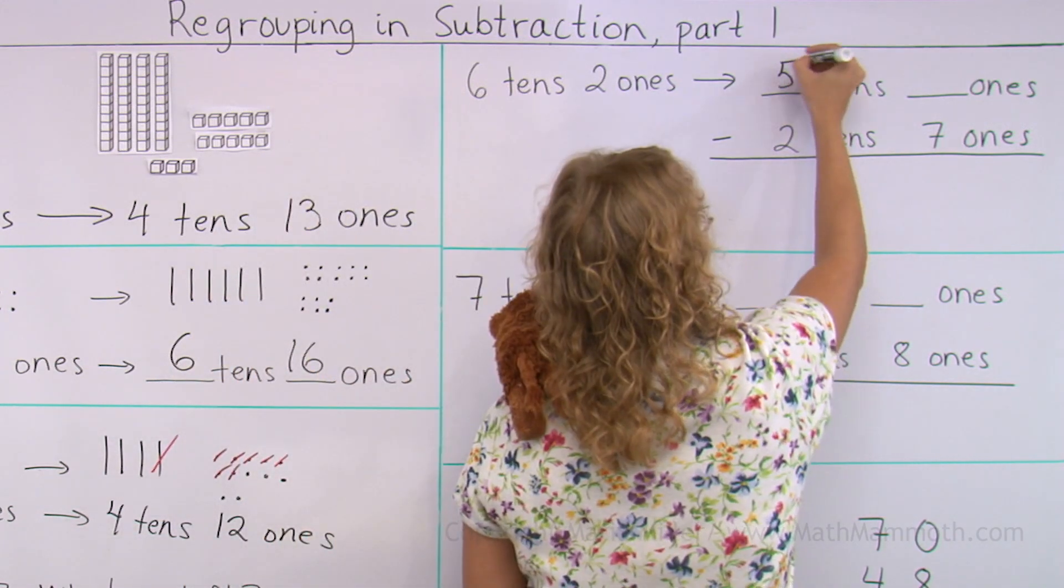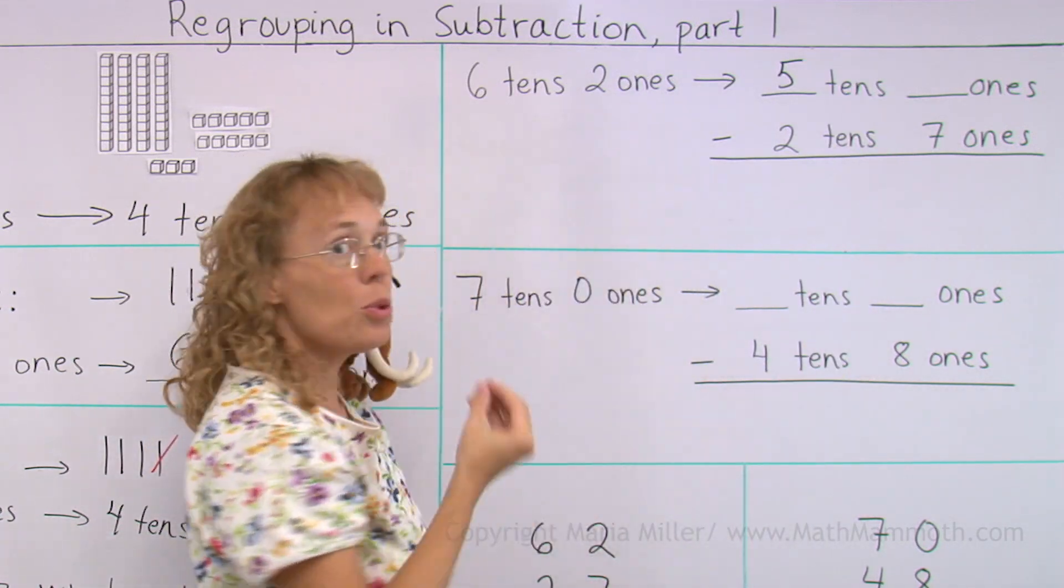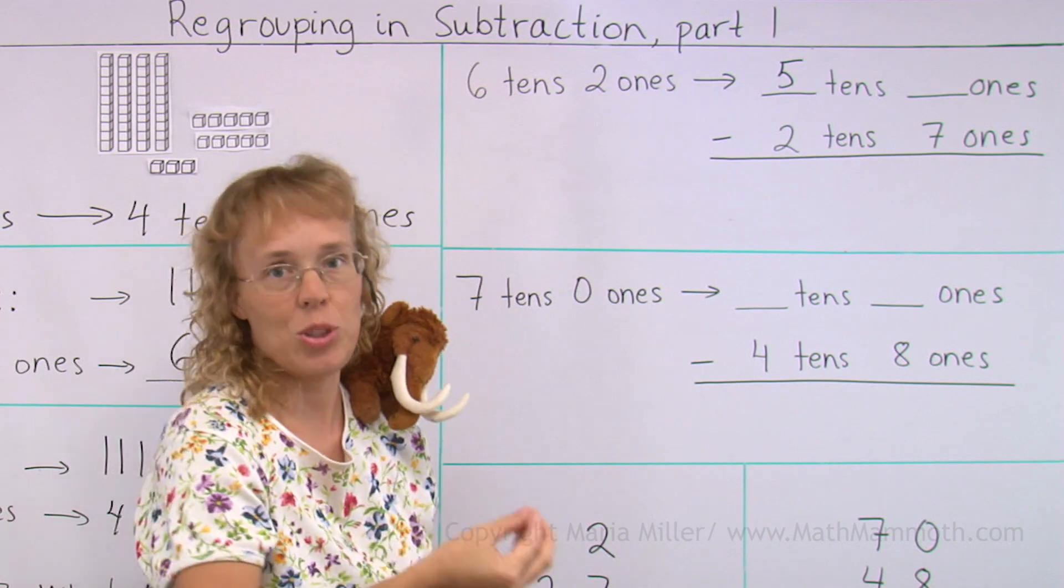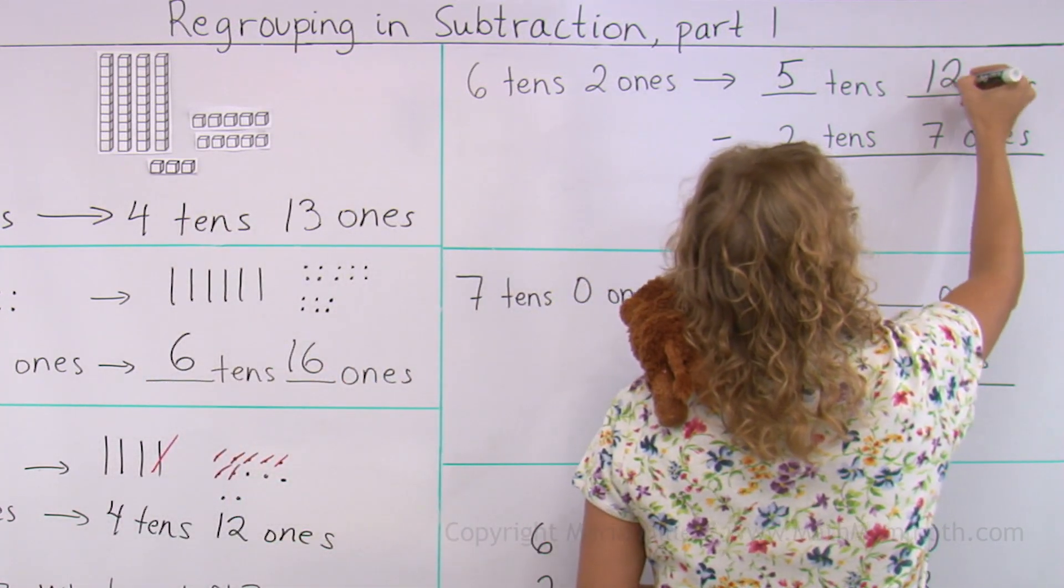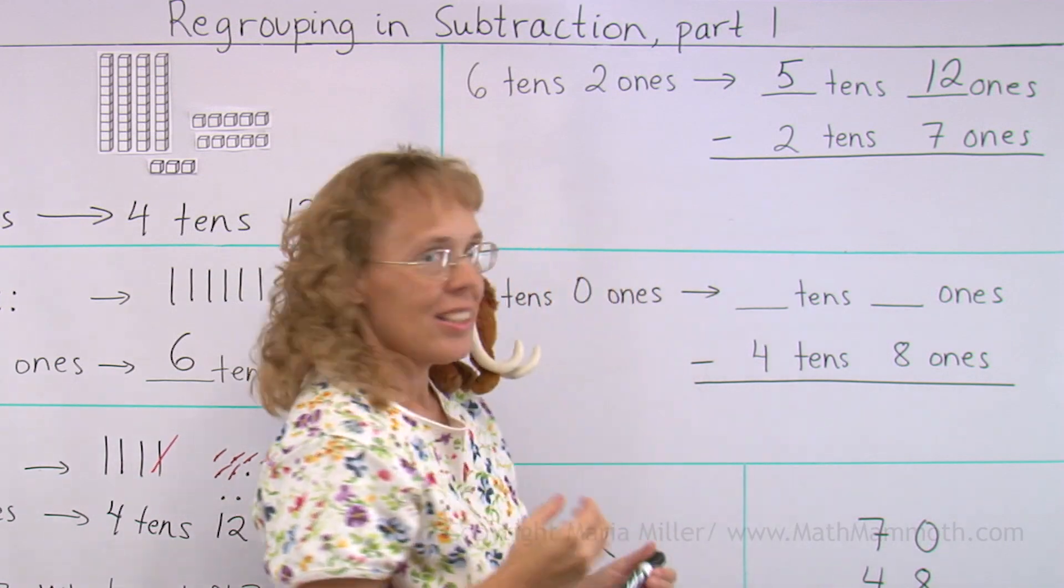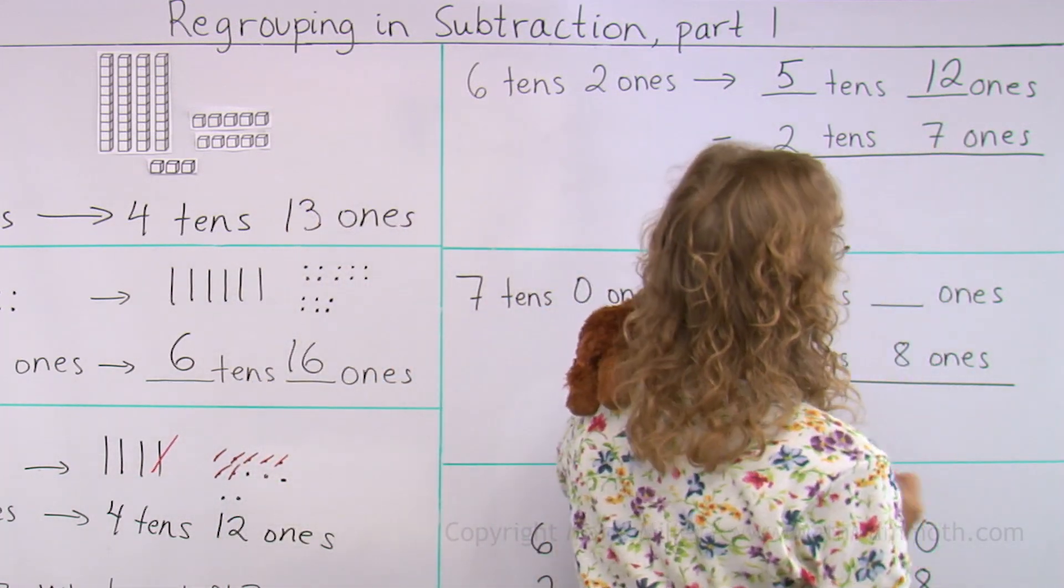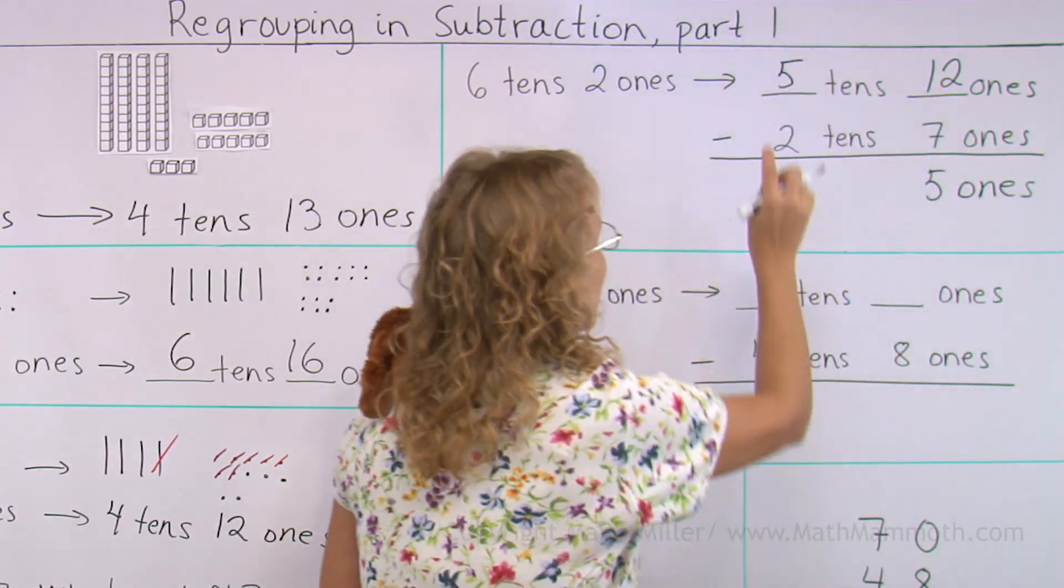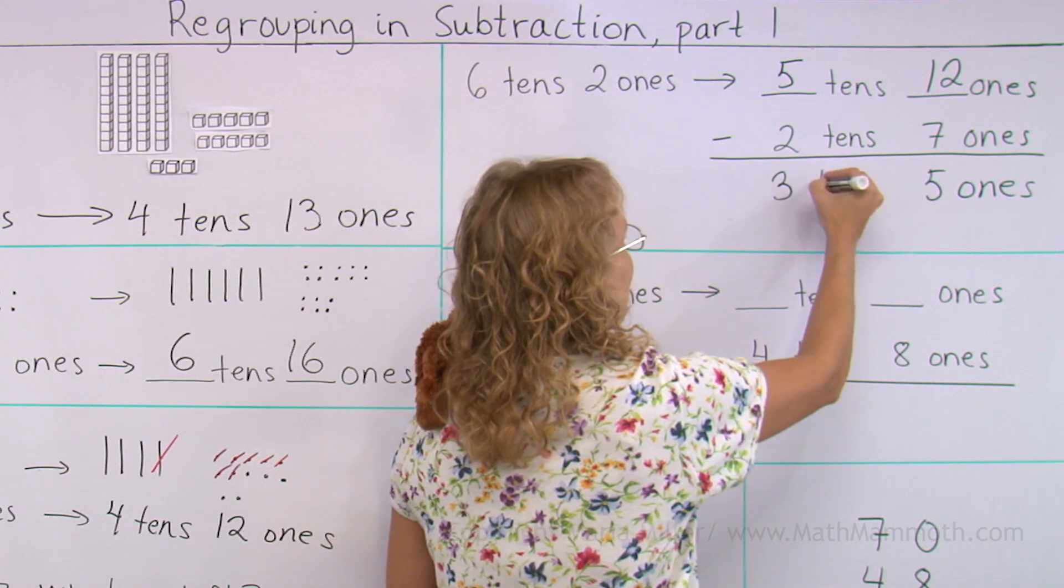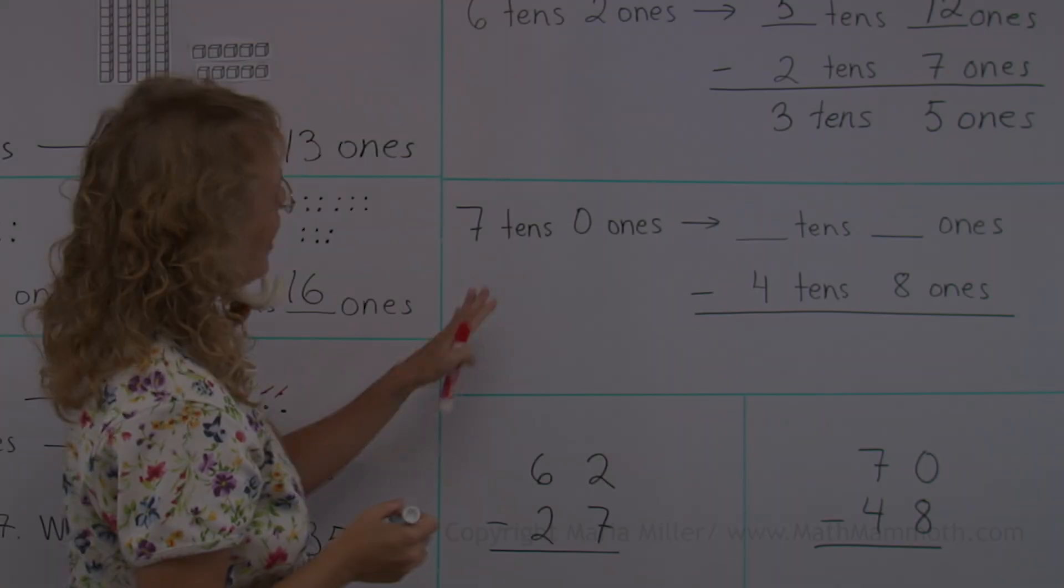So in regrouping I take one of those tens and break it down. So I am left with five tens. And then, instead of two ones, I will have ten and two ones, or twelve. Now we can subtract. Over here, twelve minus seven is five. In the tens, five minus two, three. Three tens, five ones, or thirty-five. Let's do it again.